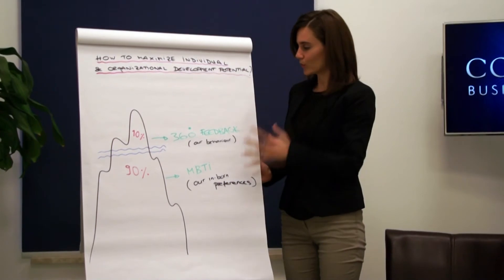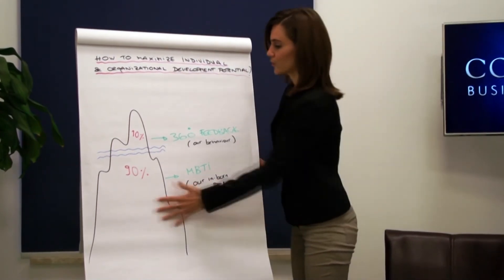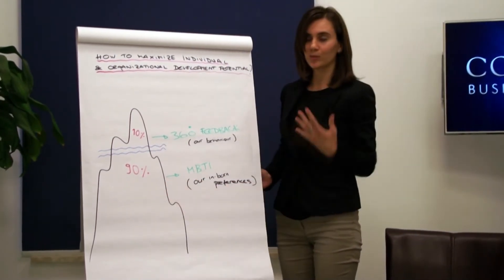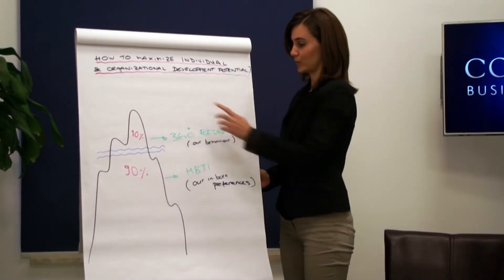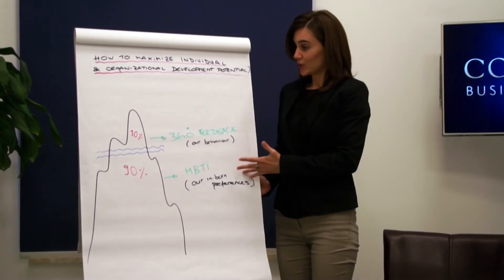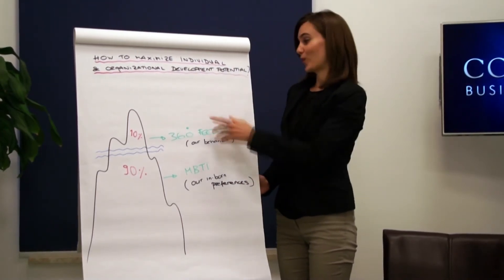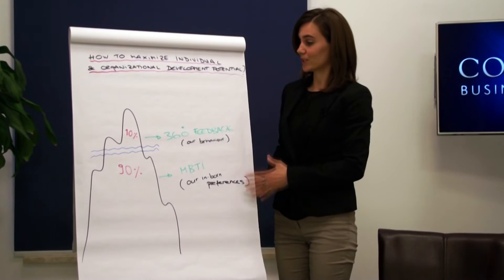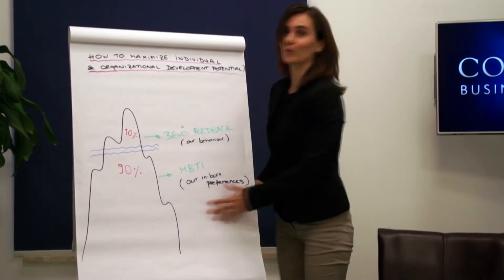However, what's even more important is the part which is below the surface and these are our inborn preferences which then affect our behaviors. These preferences will be measured by the MBTI indicator. Remember, it's important to be aware of the tip, but what's more important is to be aware of what's below the surface.